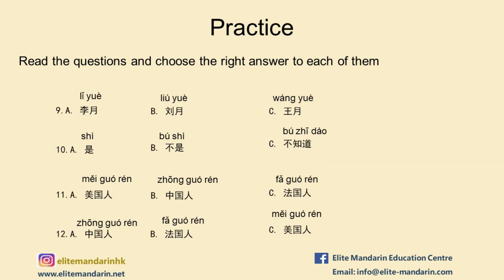Let's do some listening exercise for this part. Item 9: 他叫李月,他是老师。他叫什么名字? Item 10: 大卫是美国人,他是学生。大卫是美国人,他是学生。